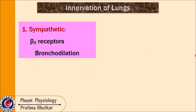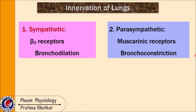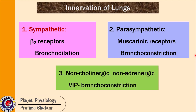Lungs are innervated by the autonomic nervous system. There are beta-2 receptors on the tracheobronchial tree, and sympathetic stimulation acts through these beta-2 receptors to cause bronchodilation. There are also muscarinic receptors on the tracheobronchial tree, and the parasympathetic nervous system acts through these to cause bronchoconstriction. Additionally, non-cholinergic non-adrenergic fibers that secrete VIP (vasoactive intestinal peptide) also cause bronchoconstriction.